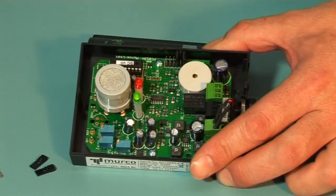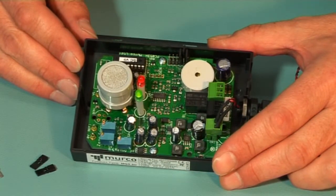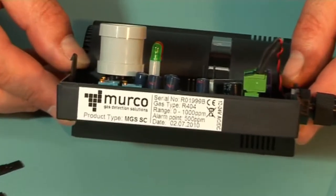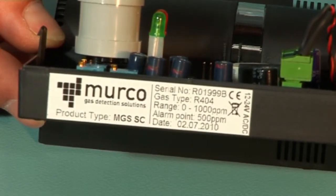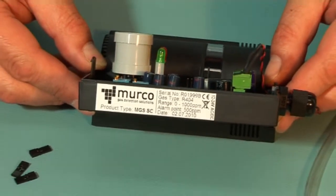Before performing your test, the MGS must be powered up overnight. The rating label on the side of the MGS gives you the calibration gas, range, and alarm voltage. These values were established during the initial factory calibration of the unit.